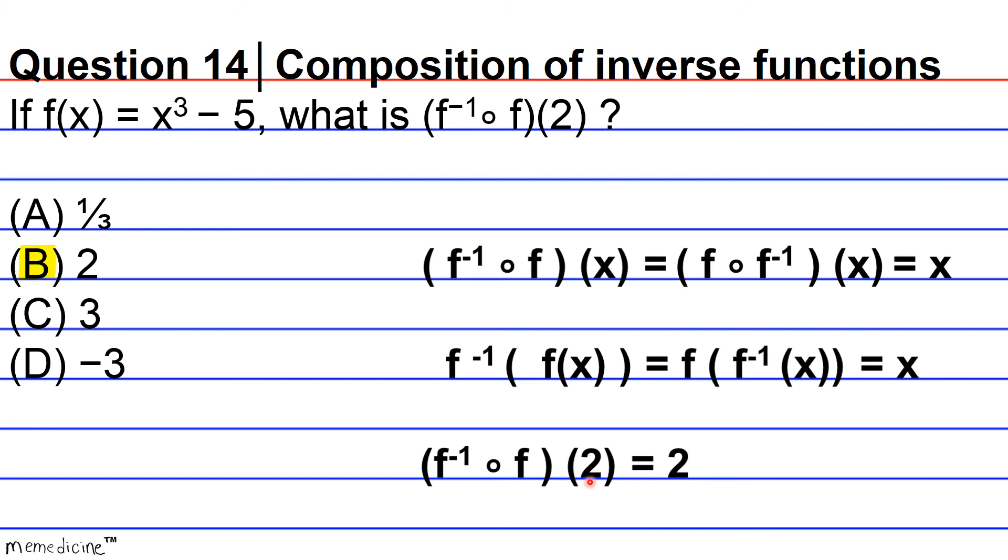Hence, the correct answer choice is answer choice b. But if you did go the route of doing the extra work, which would increase your chances of making a mistake that would reflect your skill, but it would not reflect your intelligence. Because intelligence means producing an answer as swiftly and correctly as possible. It's not necessarily a demonstration of skill unless you need to show your work.